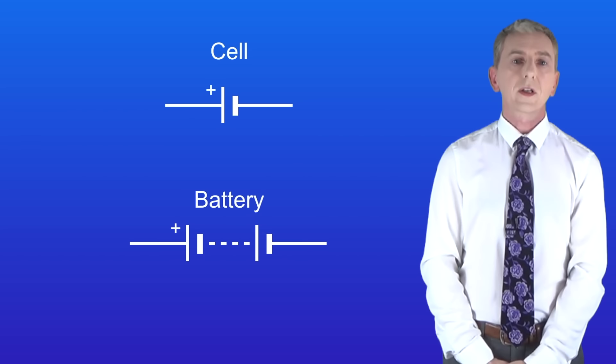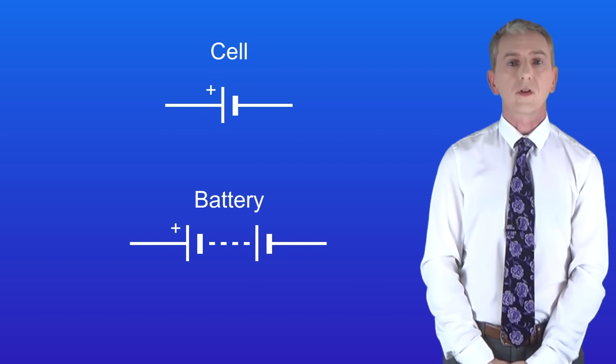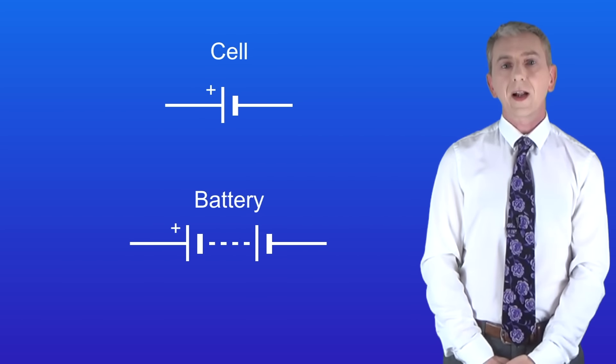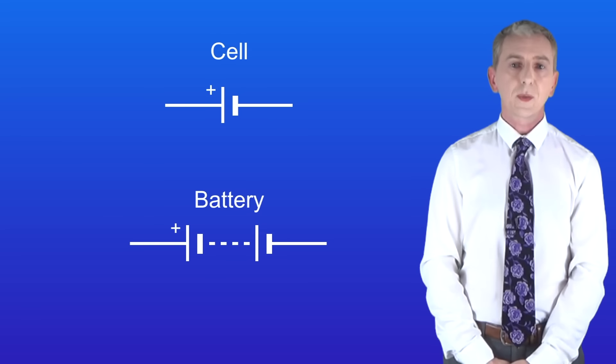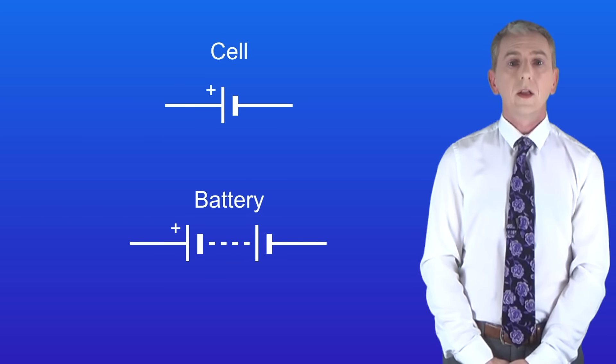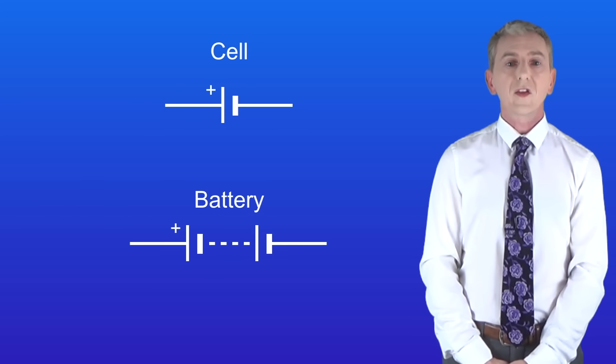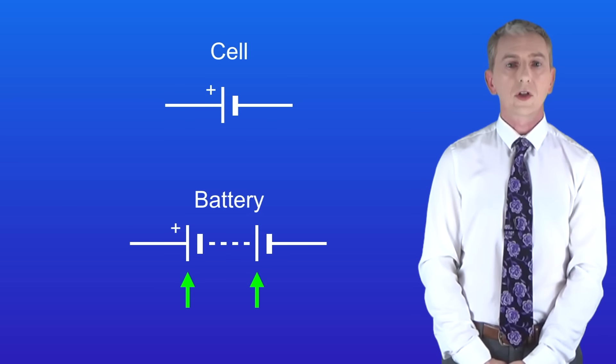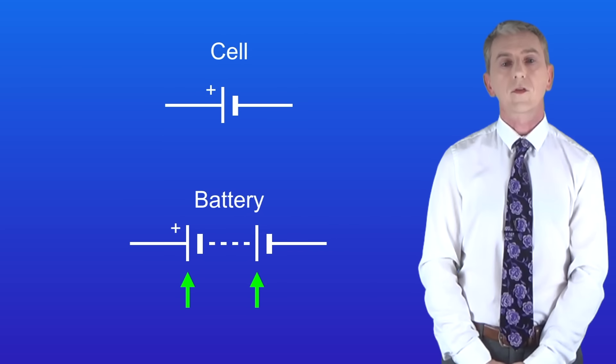There is one key point about batteries: the cells in a battery must be connected in the same direction. As you can see in this battery, the positive ends of the two cells are both pointing to the left.